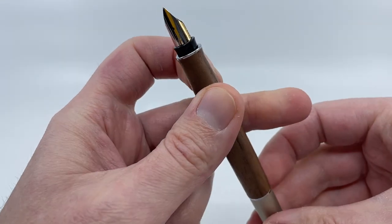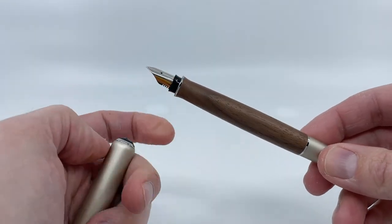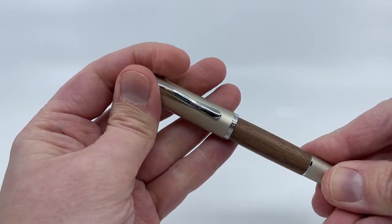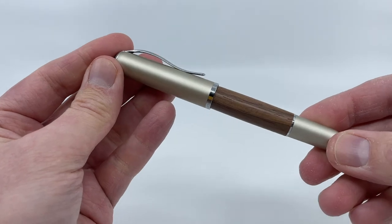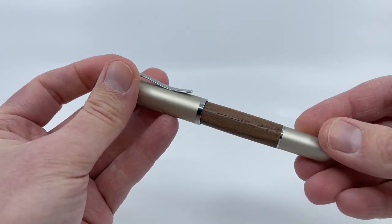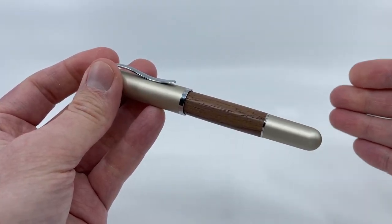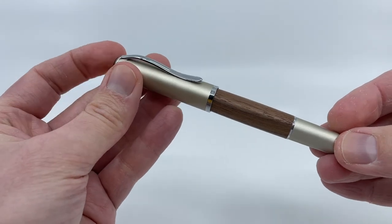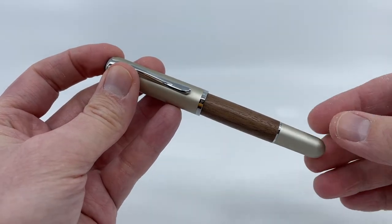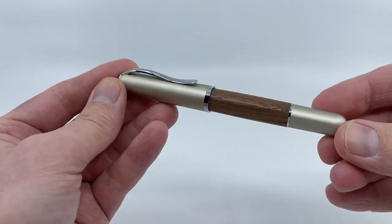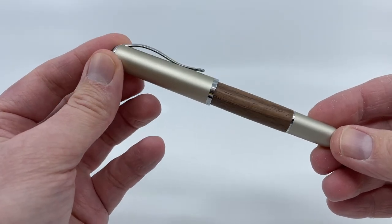So this was kind of the pinnacle of the Epic line. And consequently, the price reflected that as we went up from P360 to 361, 362, 363, and now 364, each subsequent model brought a higher price tag with it, secondary to the materials used and the like.